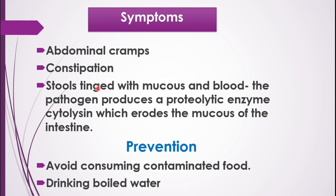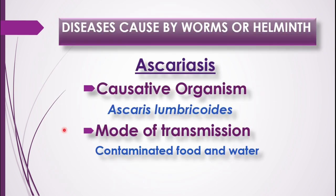The disease is amoebiasis. Prevention is closely linked with the mode of transmission. The first way to prevent the disease is to avoid consuming contaminated food and always keep food covered, not exposed to house flies. The second method is to drink boiled water. These are the two methods by which you can prevent the disease.